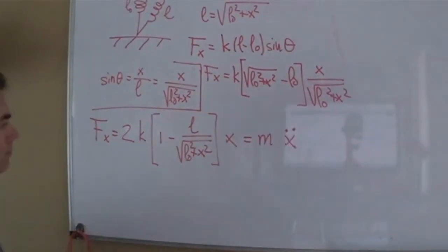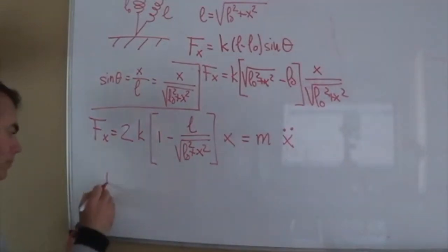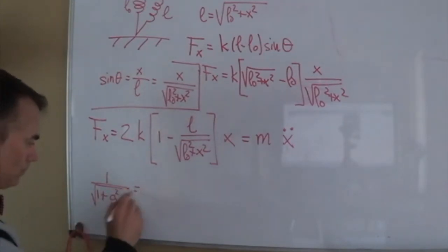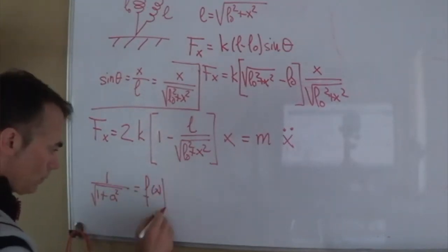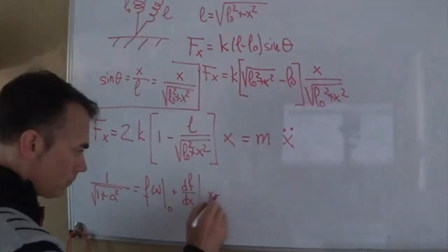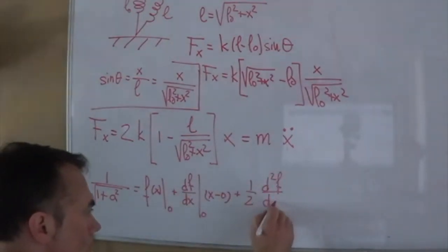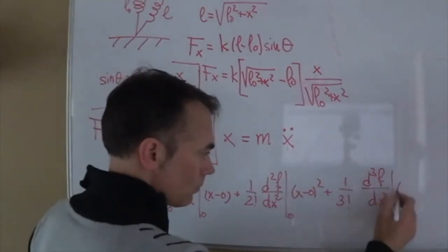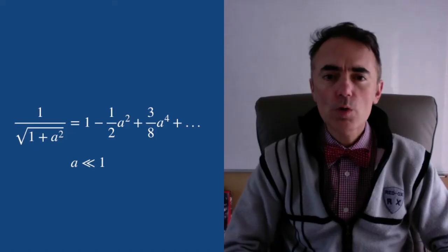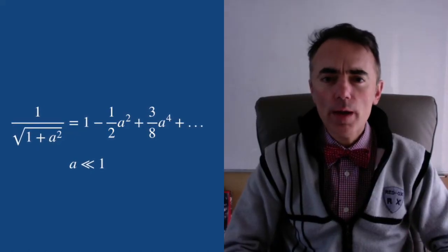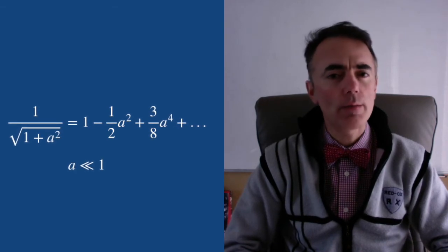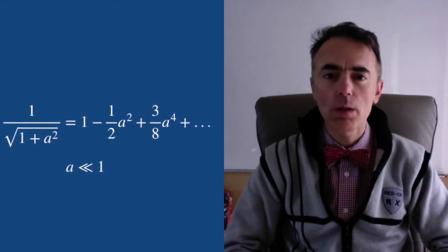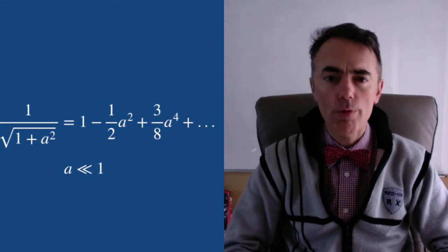This is not a very simple expression though. Let's assume that the oscillations are small. And then this means that x over L0 square is small. Let's expand this square root in series of Taylor. Remember that for a series of Taylor's expansion, we approximate the function as the polynomial that we obtain by successive derivatives. So 1 over the square root of 1 plus a square for a very small can be approximated by 1 minus 1 half of a square plus 3 over 8 of a to the 4th. This back into the force of the springs.